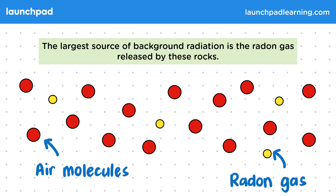Radon is particularly dangerous as it's an alpha emitter that we can inhale without realising. Certain parts of the world have larger concentrations of radon in the air depending on the types of rock they have.